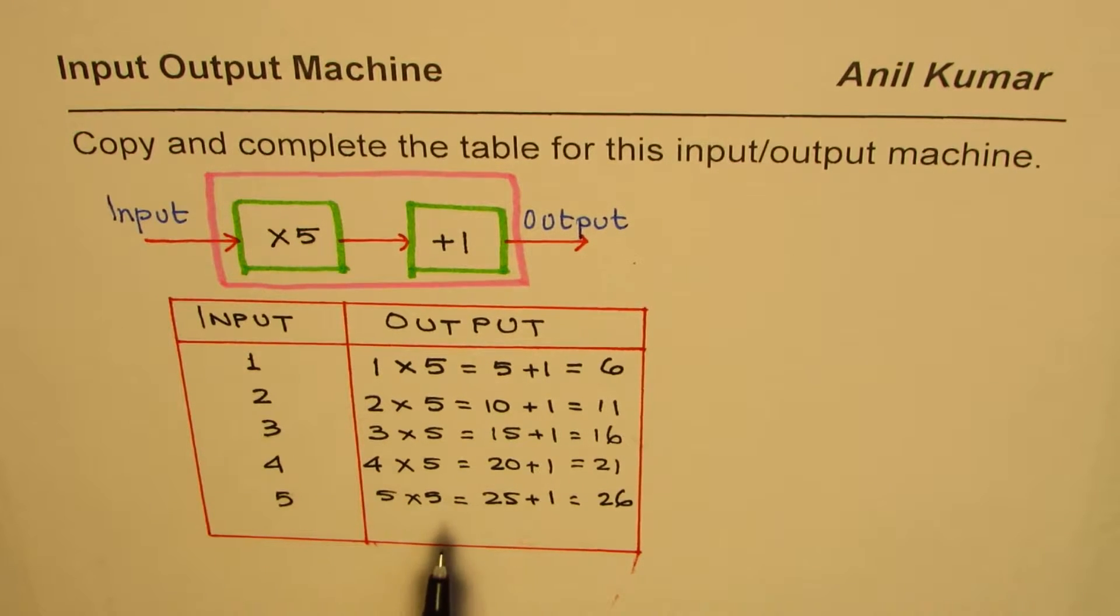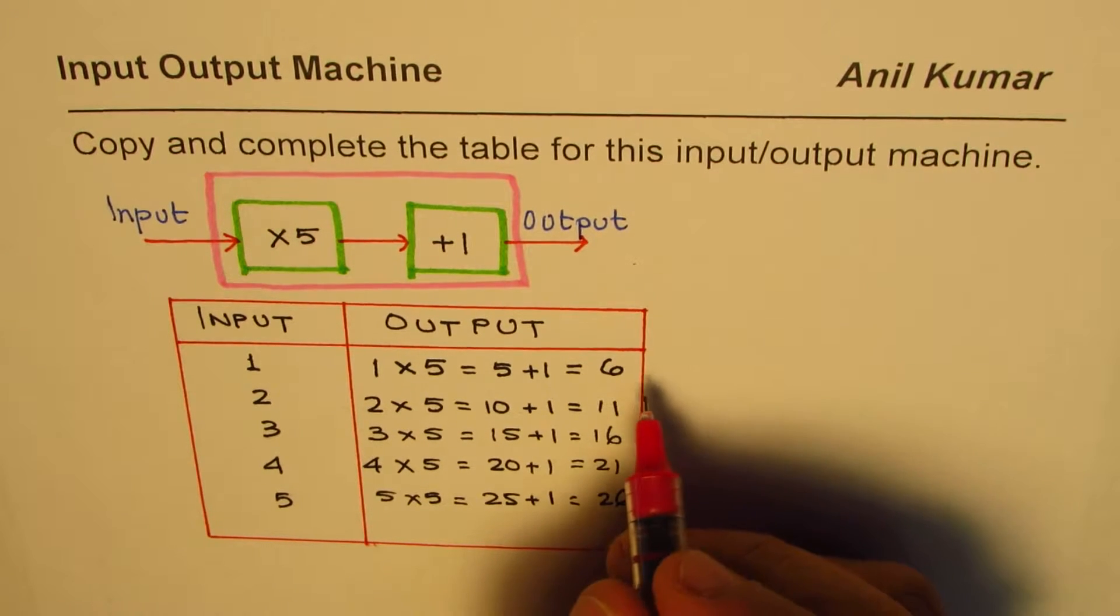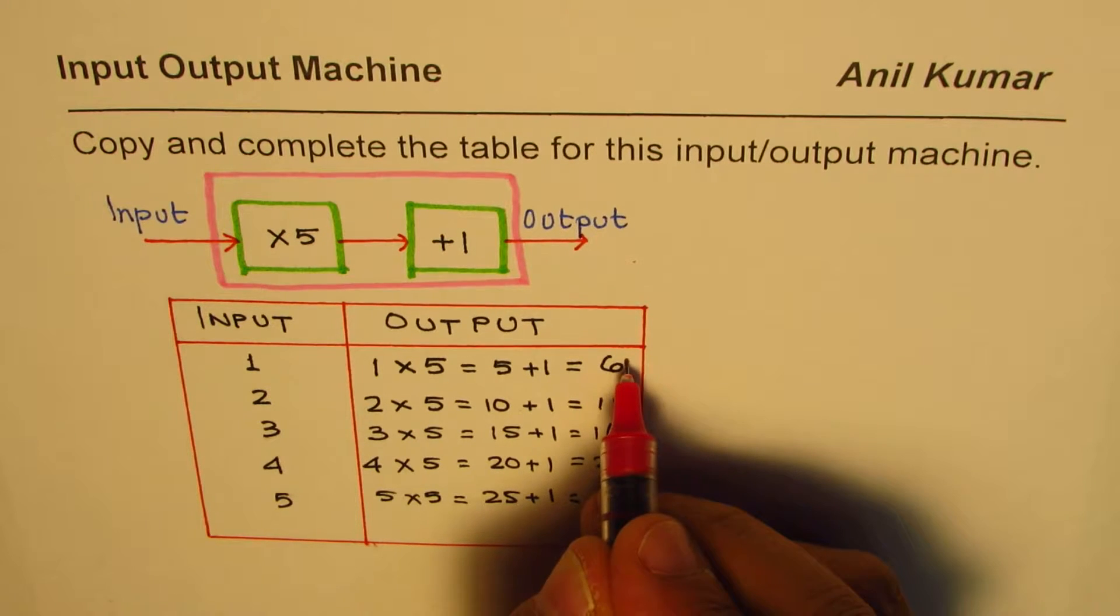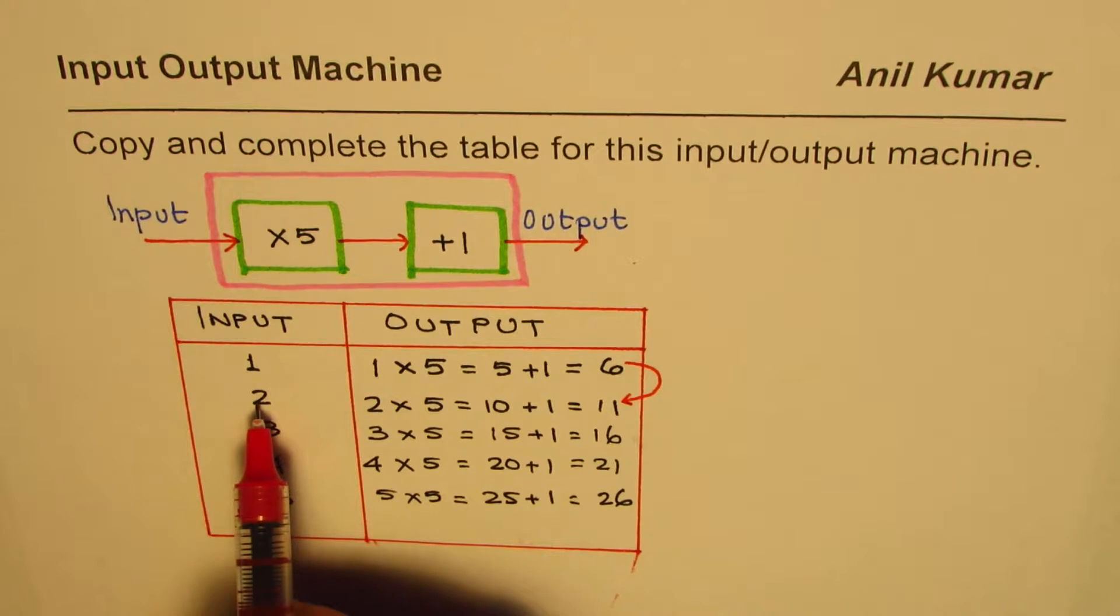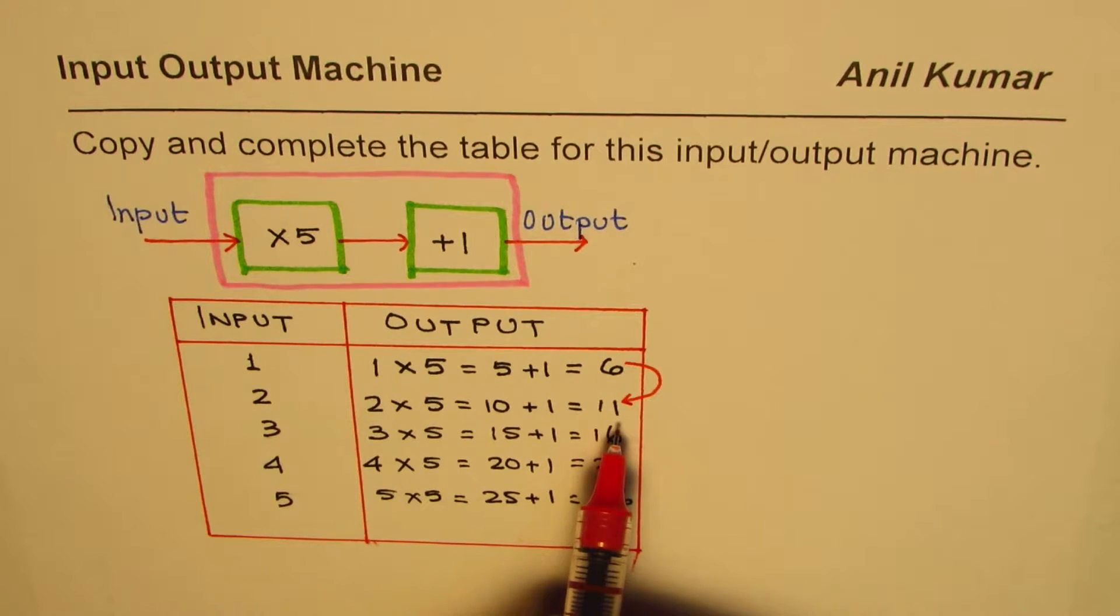So that is how you can complete the table which shows input-output operations. Now do you observe something here? As you move from one number to the other, if input increases by 1, output increases by how much?